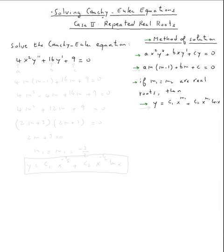All right, so let's solve this Cauchy-Euler equation. Four x squared y double prime plus sixteen y prime plus nine equals zero.